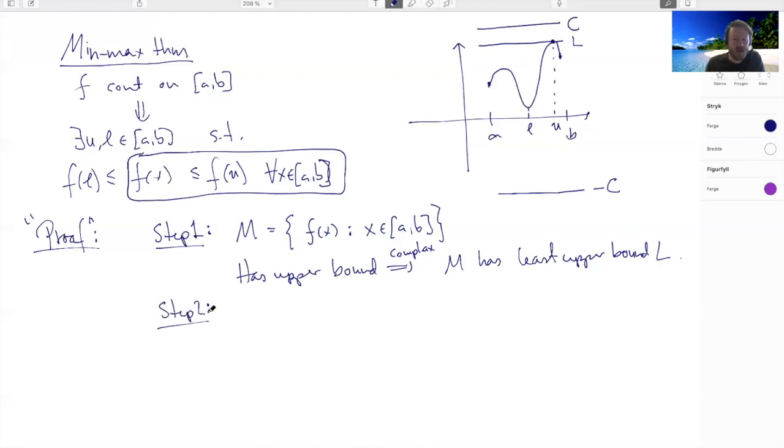we are now going to try to get the Bolzano-Weierstrass theorem into play. And keep in mind, so I'm not going to write it up, but the Bolzano-Weierstrass says that any sequence in the closed and bounded interval [a,b] has a convergent subsequence. How can we now get a sequence from this?